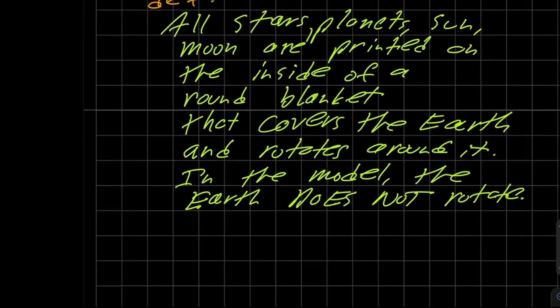And so that's the model. Let's just read through it one more time. The definition of the celestial sphere is that all stars, planets, sun, moon, in other words, anything you can think of in the sky that you'd be concerned with its motion, think of them as being printed on the inside of a large round blanket that covers the earth and rotates around it. And in the model, the earth does not rotate.